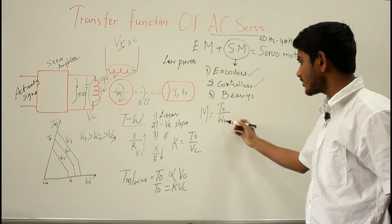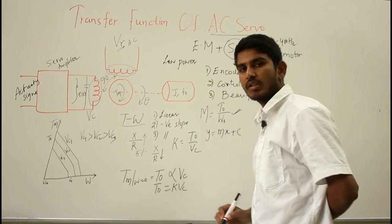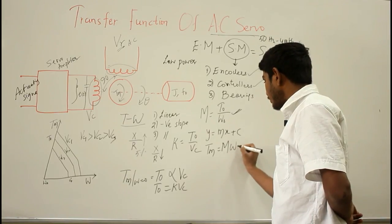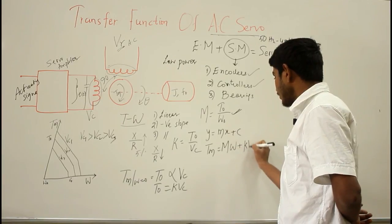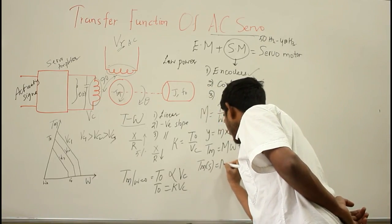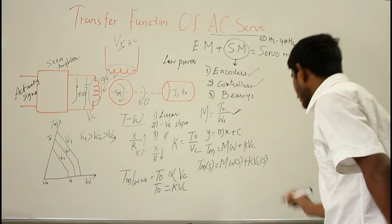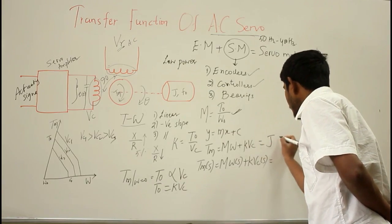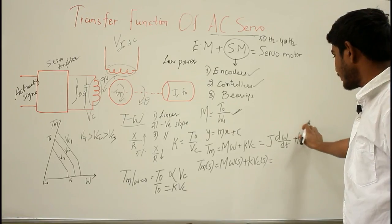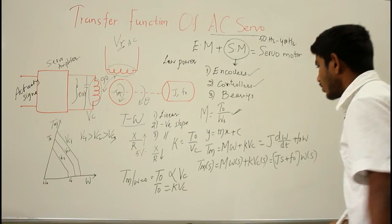From the linear torque-speed characteristics, using the line equation Y = MX + C, we can write: Tm = M·Ω + T₀, and since T₀ = K·Vc, transforming to the S-domain gives Tm(s) = M·Ω(s) + K·Vc(s). This torque developed by the motor equals the mechanical torque: J·dΩ/dt + F₀·Ω. Transforming this differential equation to the Laplace domain gives (Js + F₀)·Ω(s).